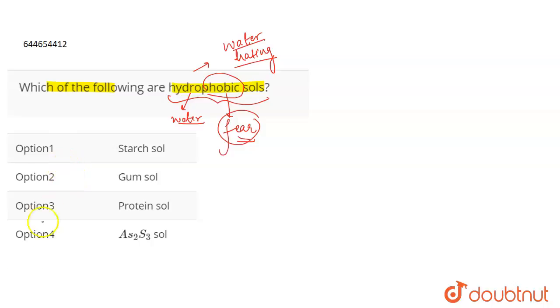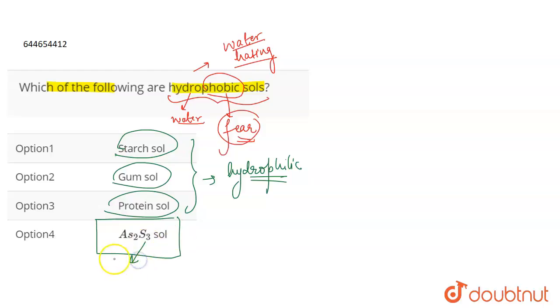Now if we talk about all the sols that are given to us in the question, then what do we know? Starch sol, gum sol, protein sol - all these are hydrophilic. Hydrophilic means they are water loving.